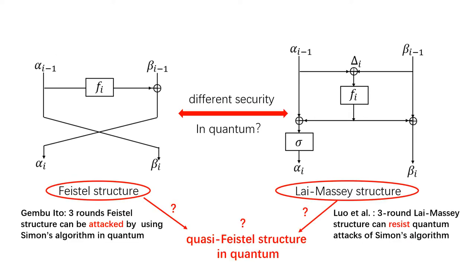In the quantum setting, Zheng Boydao showed that the three-round Feistel structure can be attacked by using Simon's algorithm. However, Luo et al. showed that the three-round Lai-Massey structure can resist quantum attacks of Simon's algorithm, which is different from the Feistel structure in the quantum setting.